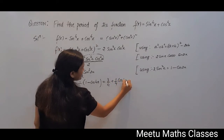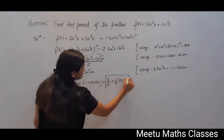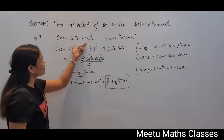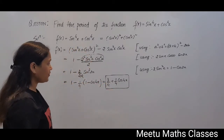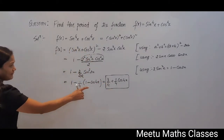That gives us 1 - 1/4 = 3/4, plus (1/4)cos4x. So your function can be written as f(x) = 3/4 + (1/4)cos4x.